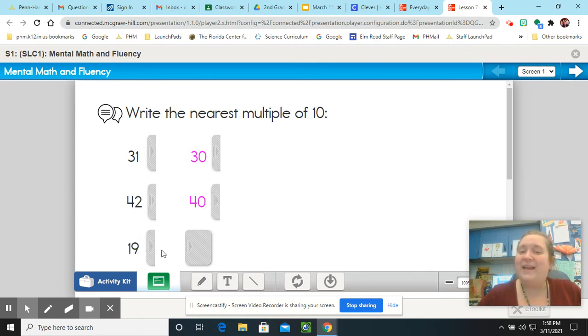Our next number is 19. What is the nearest multiple of 10? I see there's a 9 in the ones place. I know 9 is more than 5, so I'm going to give it a shove. And our nearest multiple of 10 is 20.